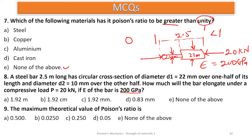Number fifteen: determine the polar moment of inertia of a shaft of a given diameter running at 240 rpm which can withstand a maximum shear of a given value. The polar moment of inertia for a solid shaft is J = πd⁴ / 32. Substituting the given diameter gives the polar moment of inertia, and the answer is option A.